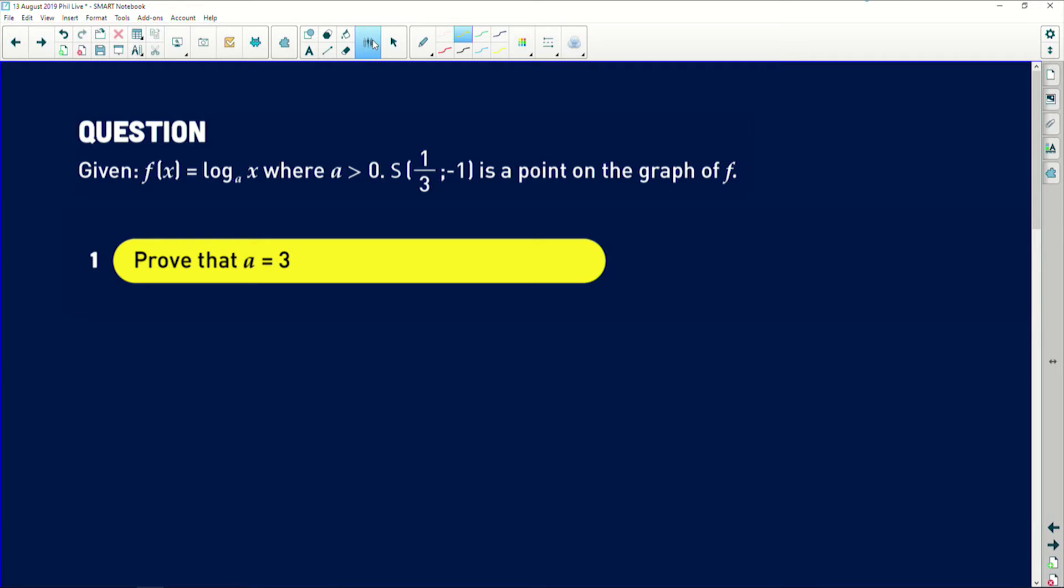It says f(x) is equal to log base a of x where the base a is greater than 0. S, which is a point at (1/3, -1), is a point on the graph of f. So we know that whatever this equation is, if you substitute 1/3 into x, you are going to get -1. So it says prove that a is equal to 3.